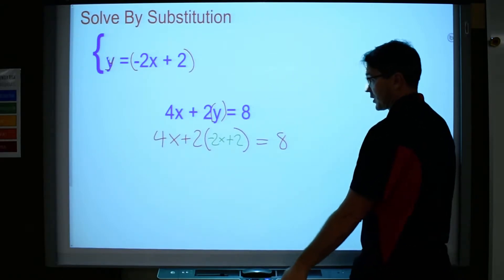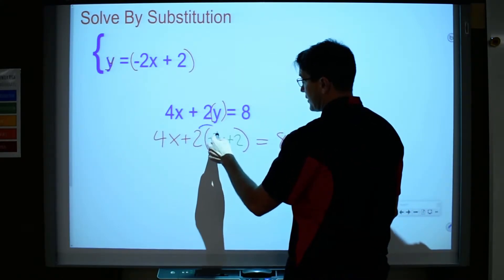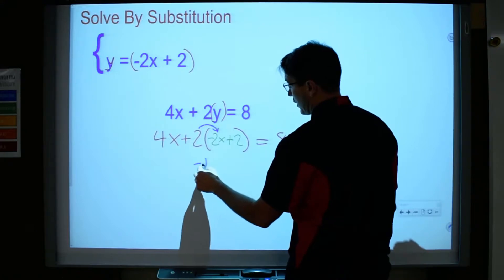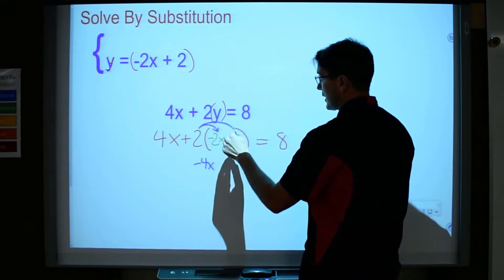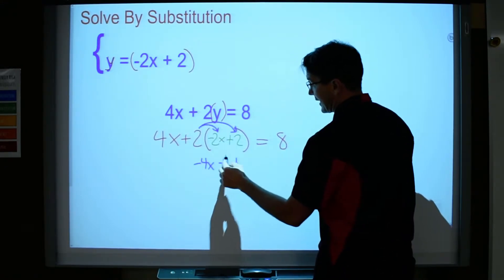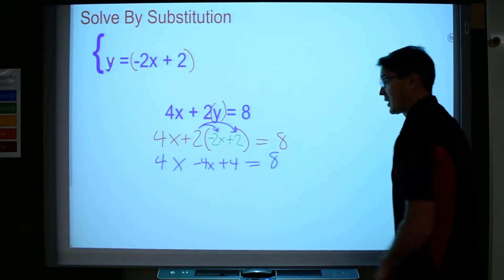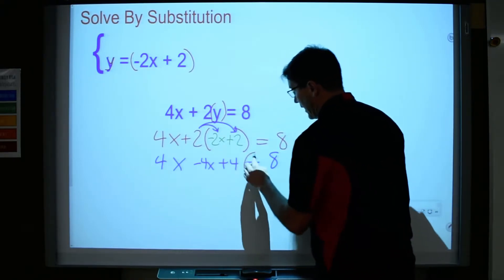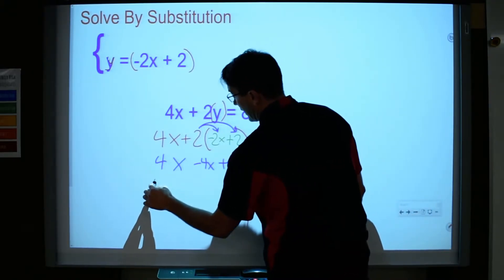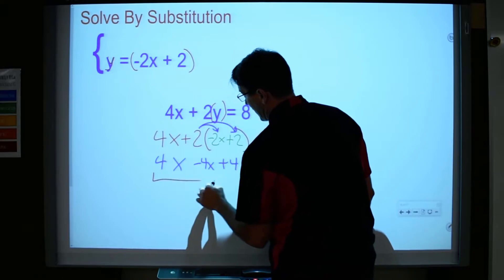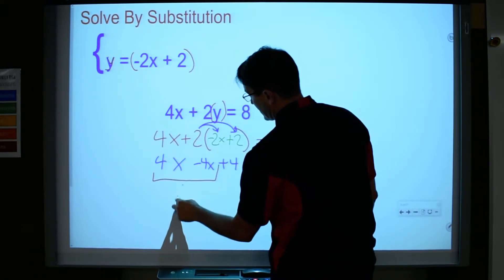Okay, so now to simplify this equation, I'm going to distribute. 2 times negative 2 is negative 4x, and 2 times 2 is 4. That gets rid of the parentheses. Bring down the stuff that was still left in the equation. Now I need to simplify this equation, and by doing that...